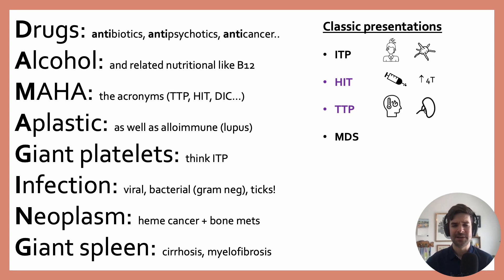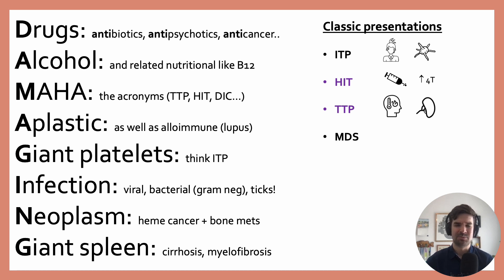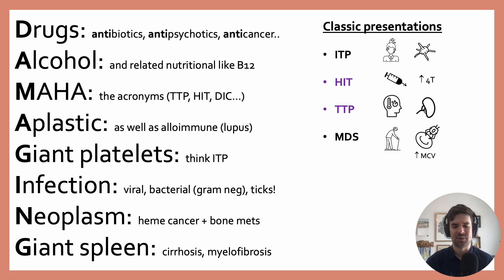TTP: you should think about TTP when you see both anemia and thrombocytopenia and renal failure, especially if the patient is febrile or confused. As more time passes, I realize that TTP can be pretty hard to diagnose. And then MDS — myelodysplastic syndrome — the classic presentation would be an older adult who also has a macrocytic anemia.